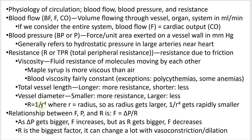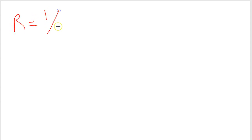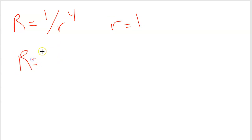Here's a formula that describes how resistance works. Big R is resistance and little r is radius. Resistance equals one over the fourth power of the radius: R = 1/r⁴. If little r equals 1, then big R equals 1 over 1 to the fourth — which is just 1. So resistance equals 1 in that case.